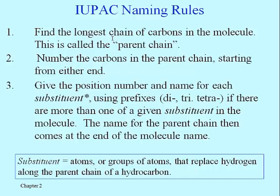When we draw out alkanes, generally the longest chain of carbons is drawn horizontally, although that doesn't have to be the case. We want to distinguish that longest chain of carbons — called the parent chain — from the branches. The fancy name for branches is 'substituent,' so some carbons are part of the parent chain and others are part of substituents or branches off that chain. Names will oftentimes have prefixes like di-, tri-, or tetra- if we have two, three, or four of a particular substituent.